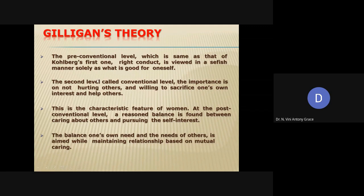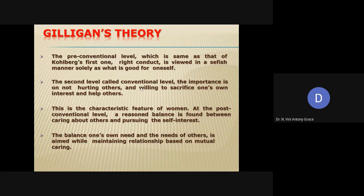Coming to the second level, there is a slight modification in the conventional level. Here, the importance is on not hurting others and being willing to sacrifice one's own interest to help others. In the conventional level, people try to please others rather than focus only on their own interest. Gilligan added that when women reach this level of moral development, they always take decisions based on not hurting others and are ready to sacrifice even their own needs to help others.